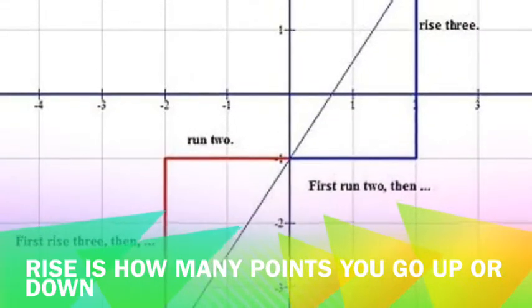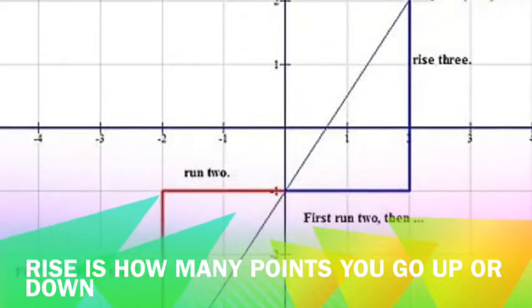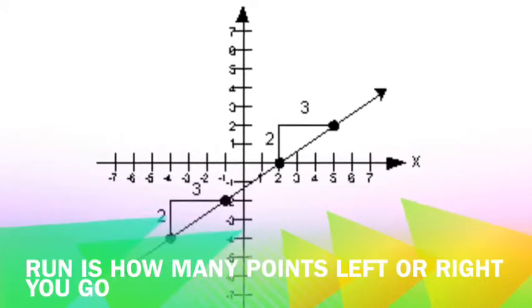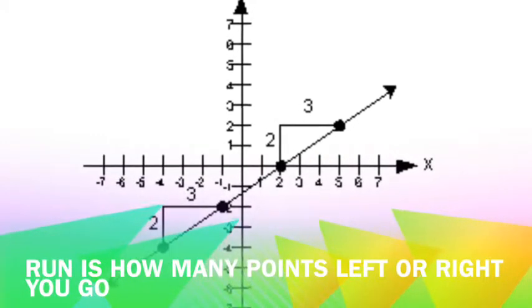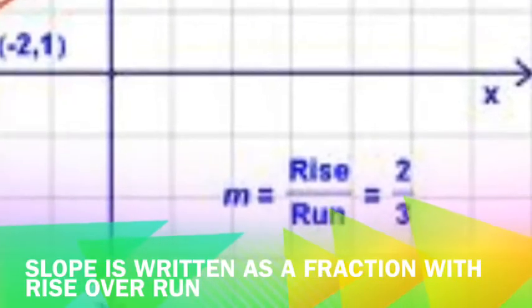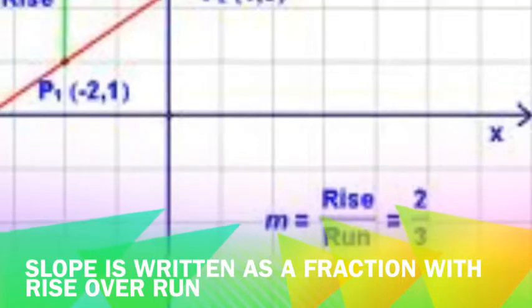Rise is how many points you move up or down on a line. Run is how many points left or right you go. Slope is written as a fraction with the rise over run.